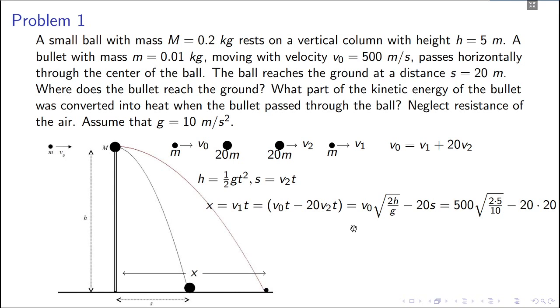So v1 is, you can convert from here, it's v0 minus 20v2, so it's v0 t minus 20v2 t. So v0 t, t you can get from here, t is square root of 2h by g, and v2 t from here is just s. Then you just put the values and you will get your answer 100 meters. And then it's saying what part of kinetic energy of the bullet was converted into heat. So you find the initial energy before collision and the energy after collision, take the difference of that, and then you can find this fraction.